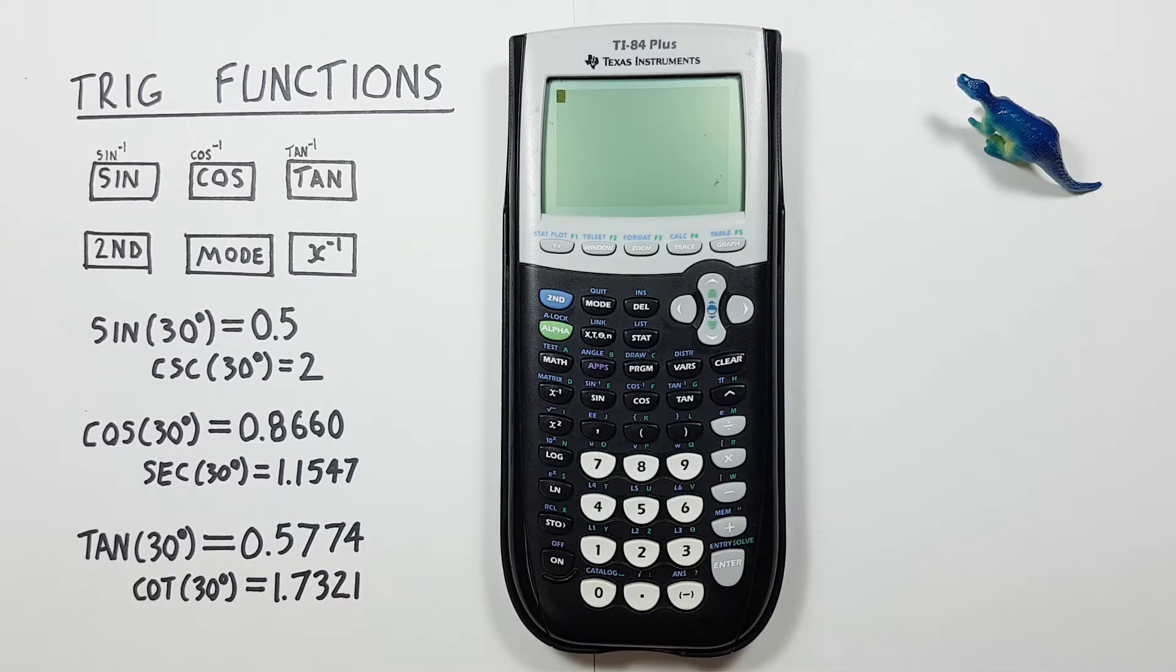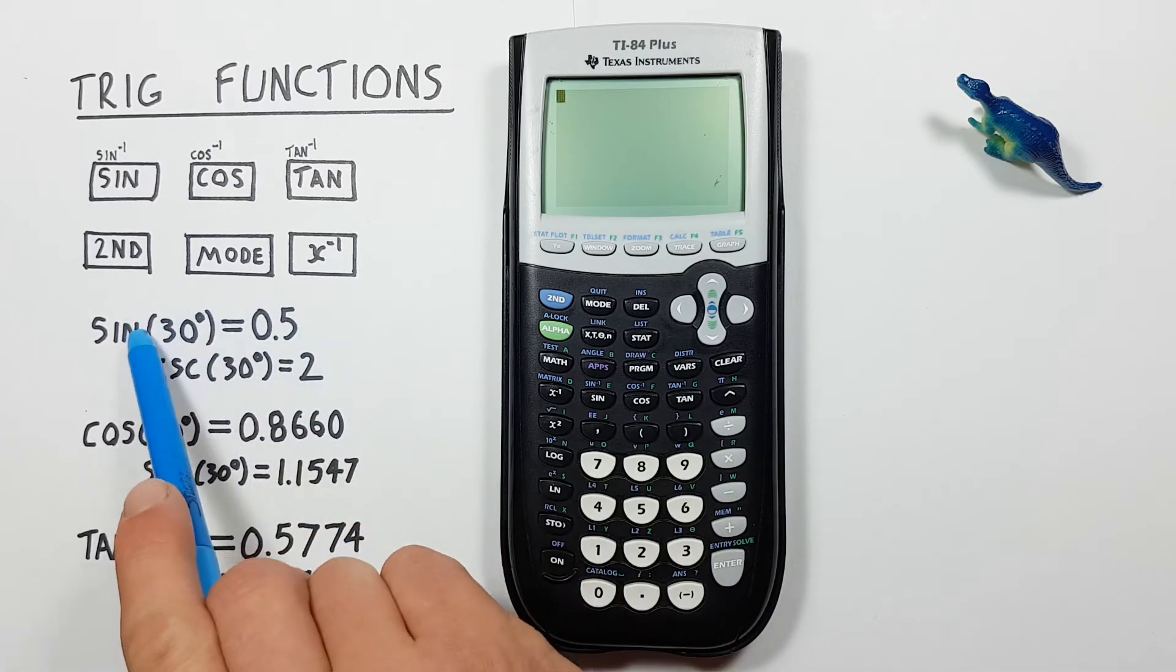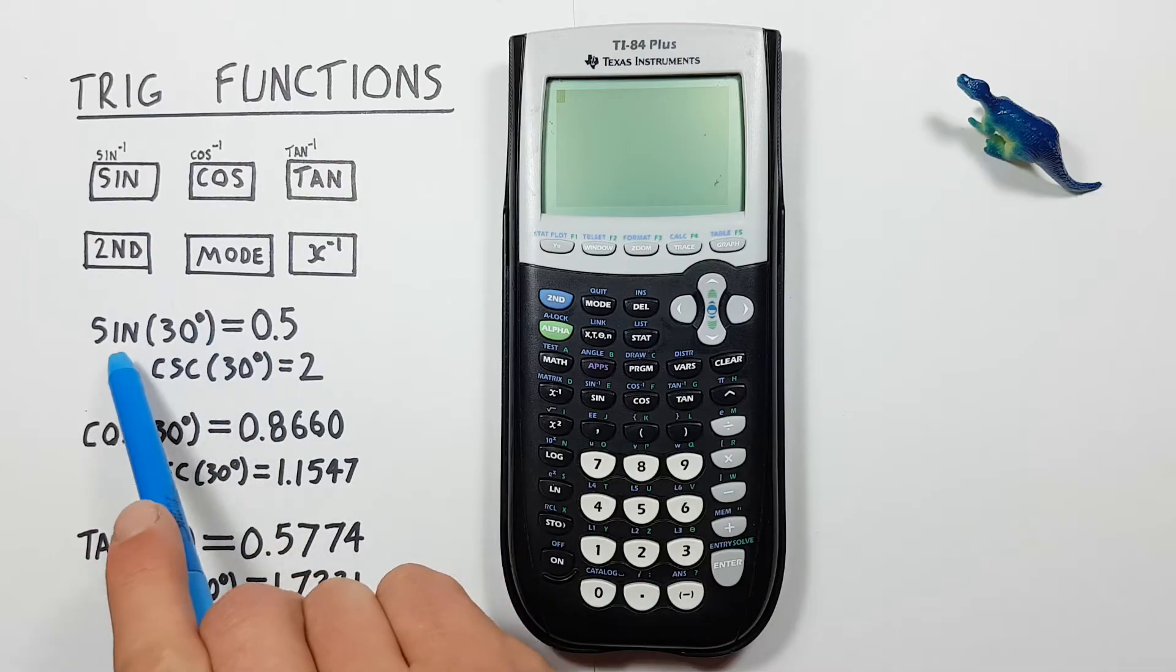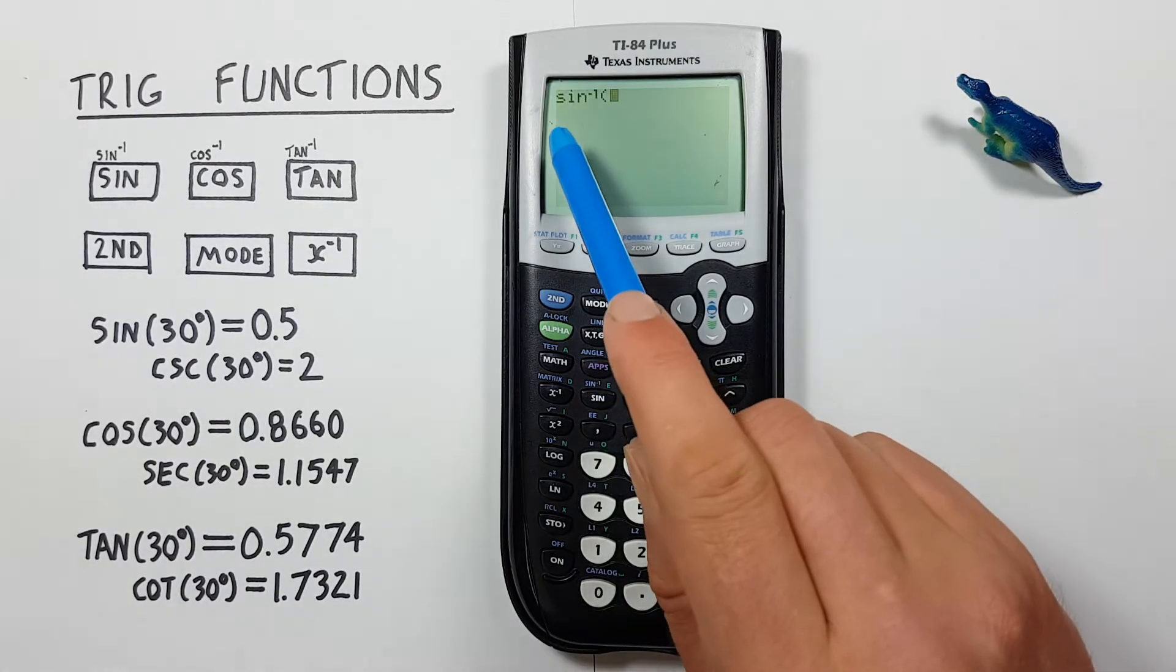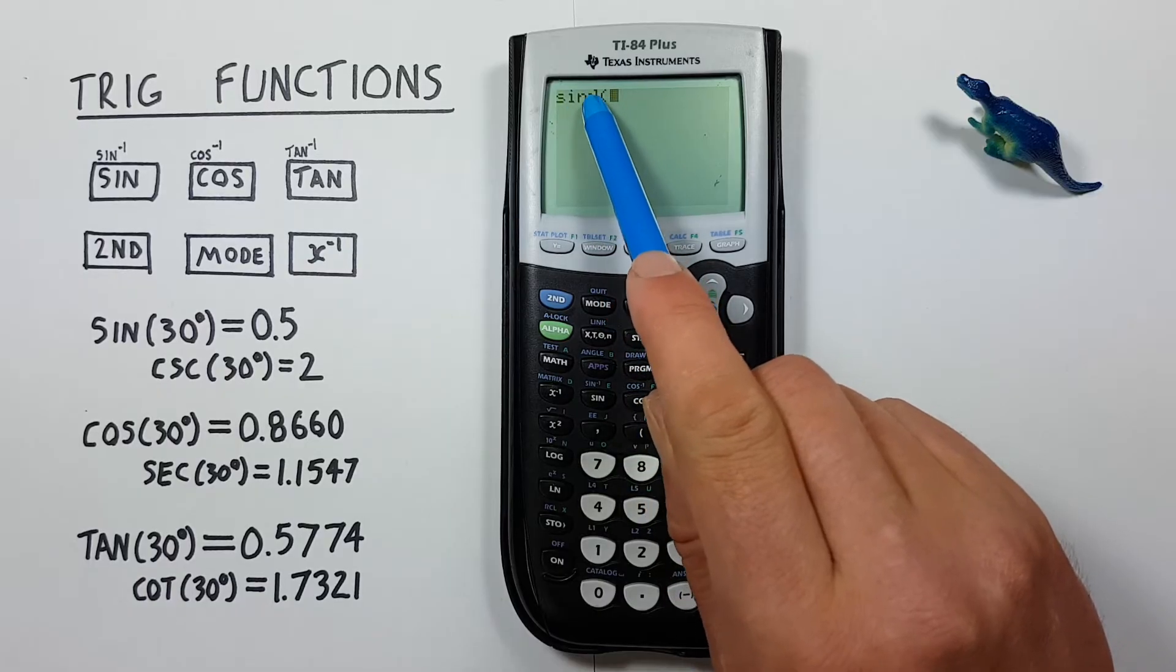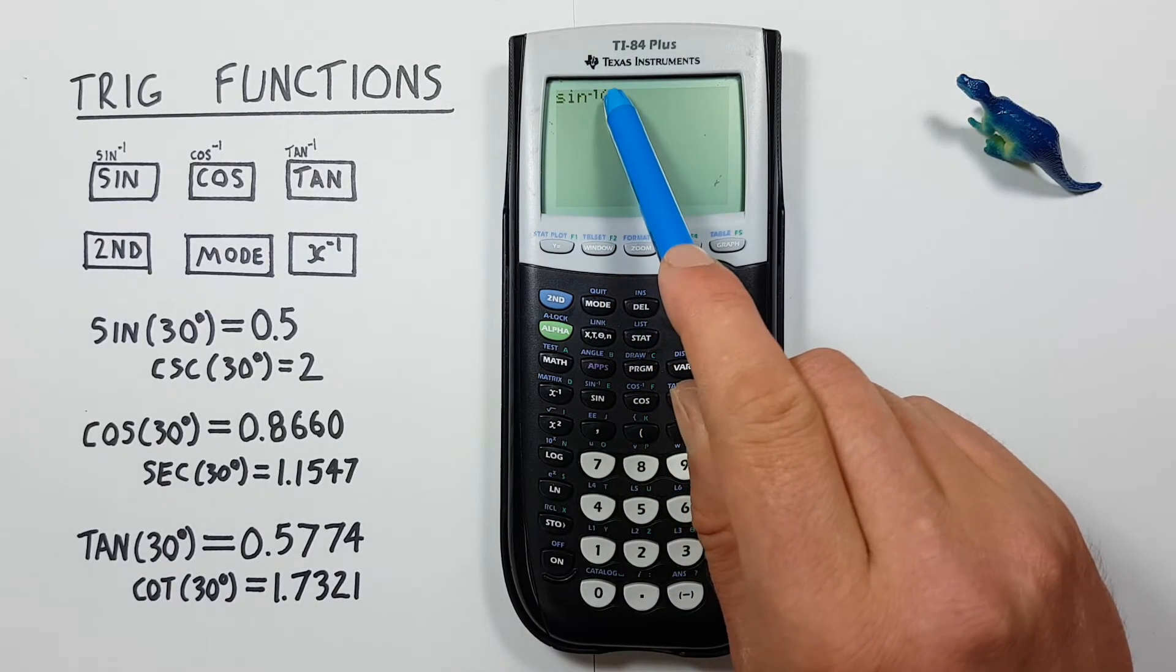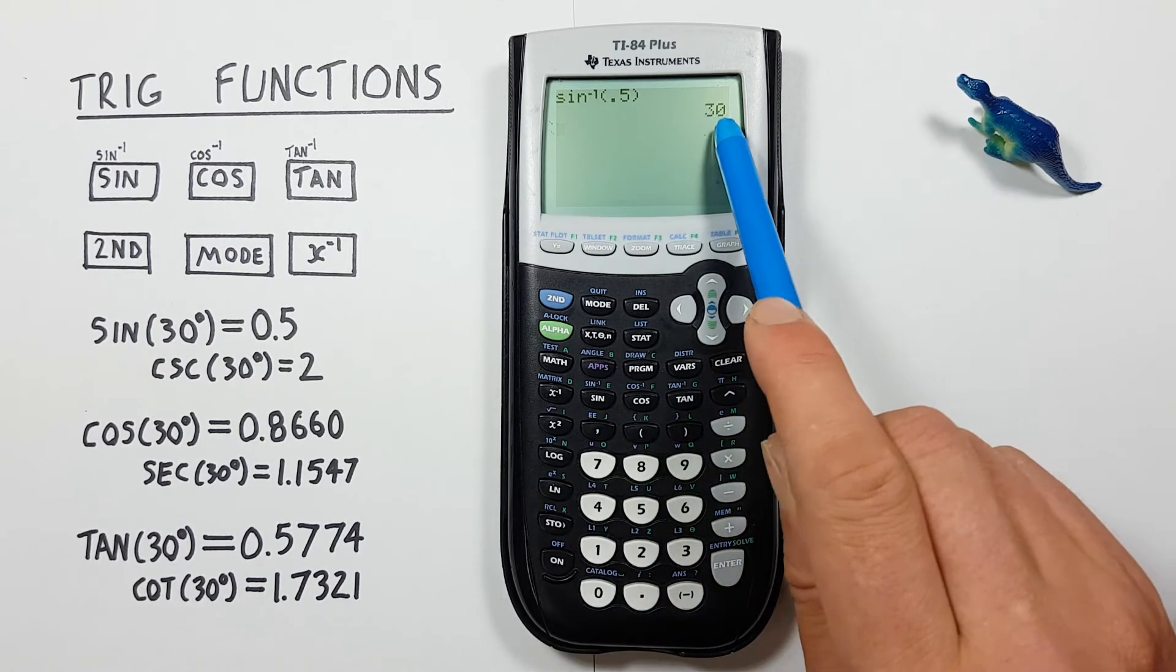This calculator can also give us arc or inverse sine, cosine, and tangent. To do that, we use the second function of these sine, cos, and tan keys. This is when we go from the, say, result of 0.5 backwards and want to find out how many degrees were used. So if we're doing arc sine or inverse sine, we would press second and then the sine. And on our screen we see sine to the power of negative one, or an inverse symbol up there. And then we have our open brackets. And we would enter our 0.5 here, close our brackets, press enter, and we see this brings us back to 30 degrees.